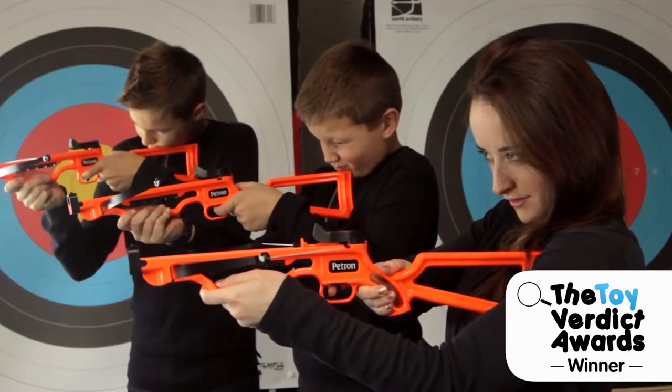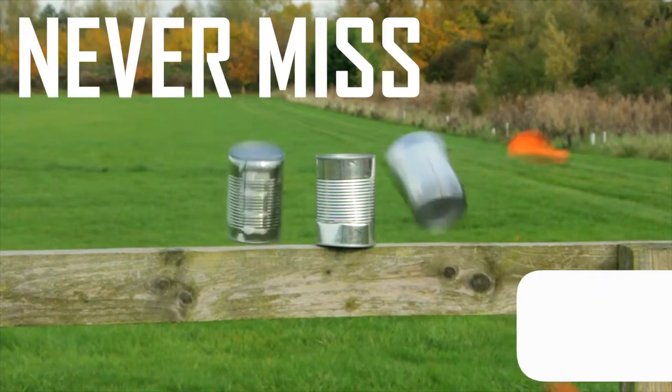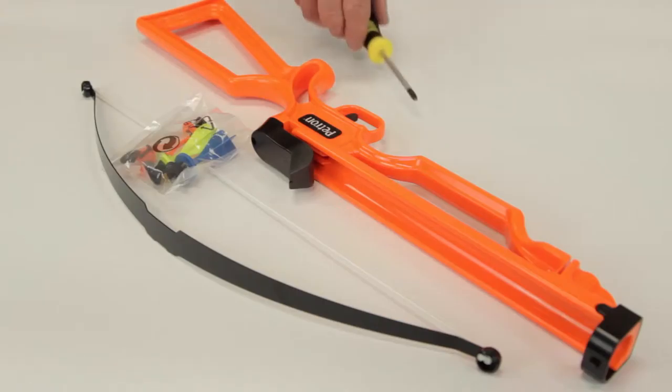Here is the SureShot crossbow from Petron, the amazingly accurate toy that lives up to its reputation of never miss again. To assemble you will need a medium-sized Phillips screwdriver.